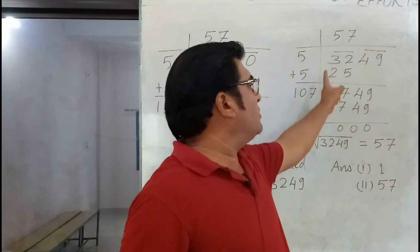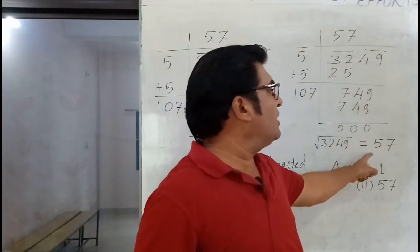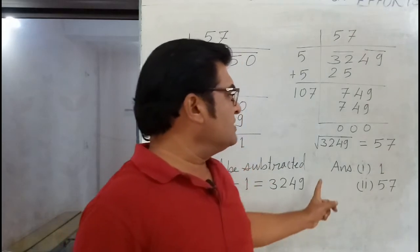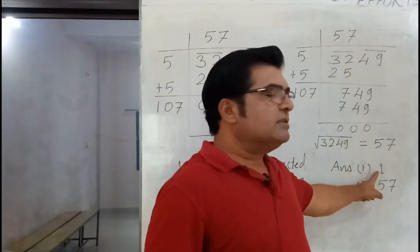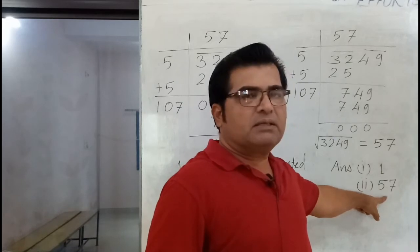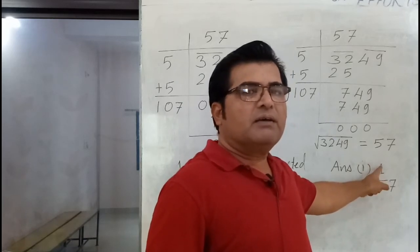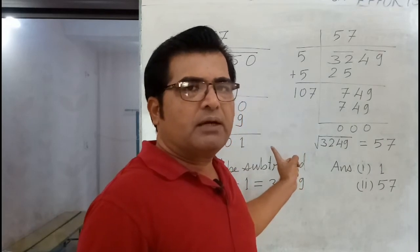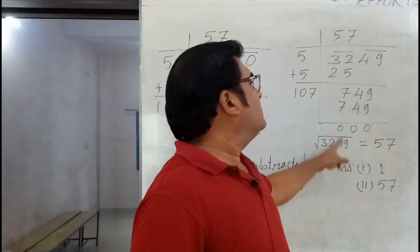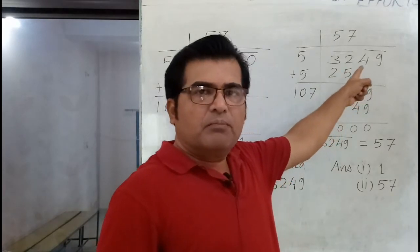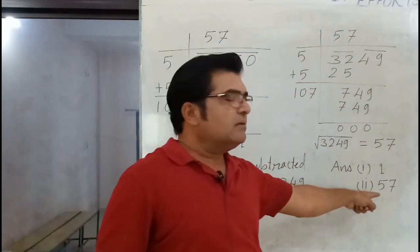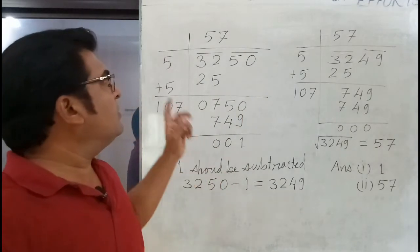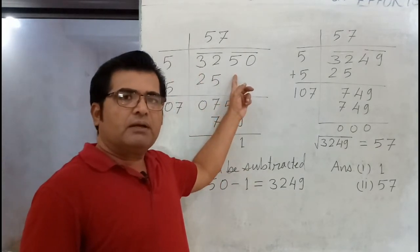We find the square root of 3,249 and get 57 with a remainder of 0, which confirms it is a perfect square. So our two answers are: first answer is 1, because 1 should be subtracted from the given number to make it a perfect square; and the second answer is 57, which is the square root of the number so obtained.